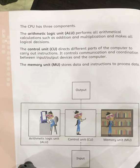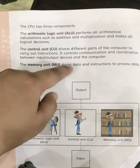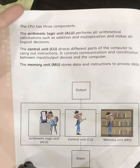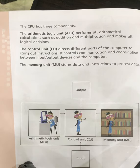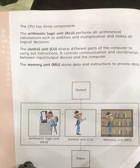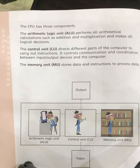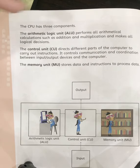The Control Unit directs different parts of the computer to carry out instructions. It controls the communication and coordination between input/output devices and the computer. Next is the Memory Unit — memory stores data and instructions needed to process data. We can store information in the computer with the help of the memory unit. If this part of the CPU were not present, we would not be able to store or process any data. These are the three important components: Arithmetic Logical Unit, Control Unit, and Memory Unit.